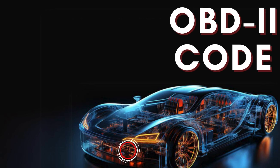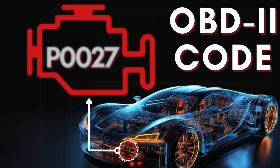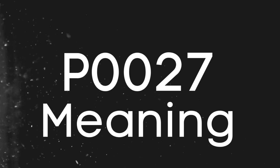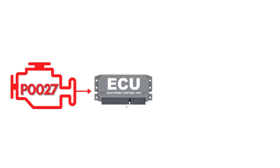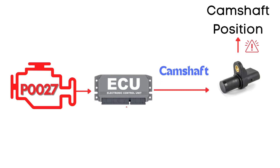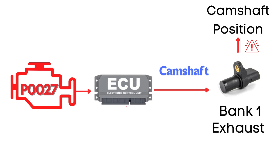Hey there! In this video, we're diving into everything you need to know about OBD-II trouble code P0027. First, let's understand what the P0027 code is. The P0027 code is triggered when the ECM detects that the actual camshaft position doesn't match the desired camshaft position. Specifically, this code points to an issue with the camshaft position actuator circuit for bank 1, referring to the exhaust camshaft.